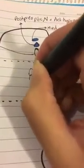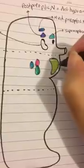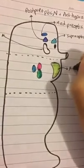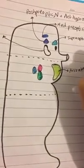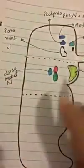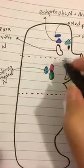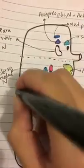Now for the fun bit: we're going to draw an arc-like structure right here, then two egg shapes here and a little separate egg here. This arc is the arcuate nucleus. Right behind it we have the dorsal medial nucleus, and this one here is the ventral medial nucleus.